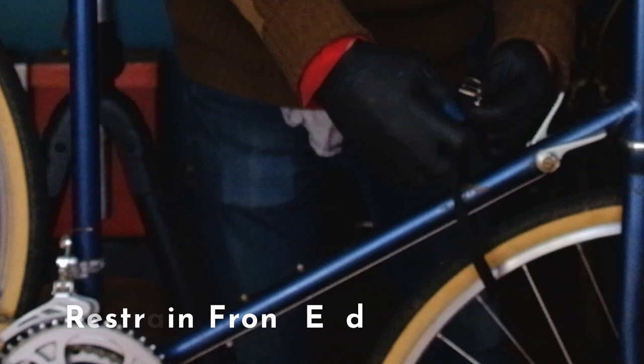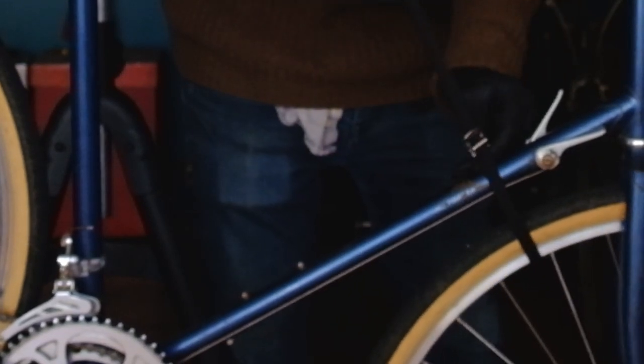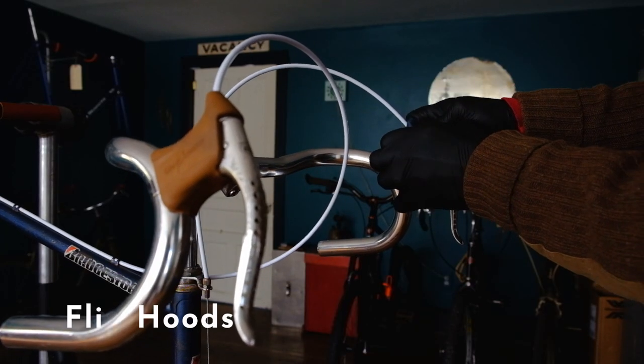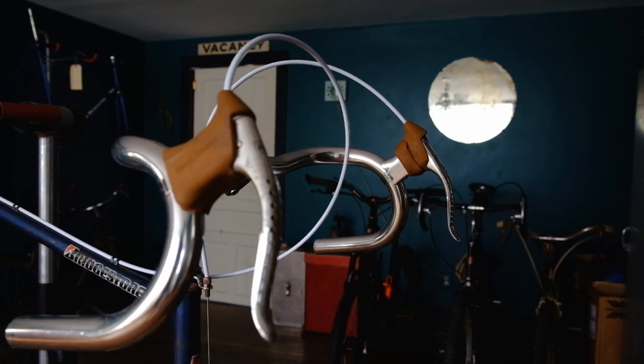You're gonna want to restrain the front wheels so the bars don't flop around like an unconscious moose on the bus. Next, snap the brake lever hoods up and out of the way while you still have two hands free.